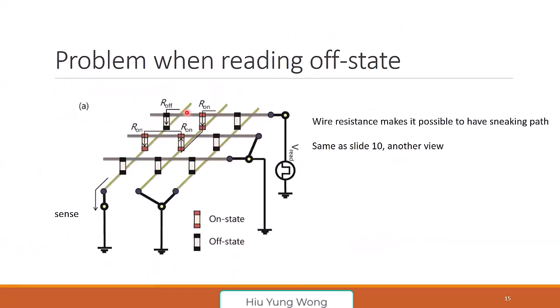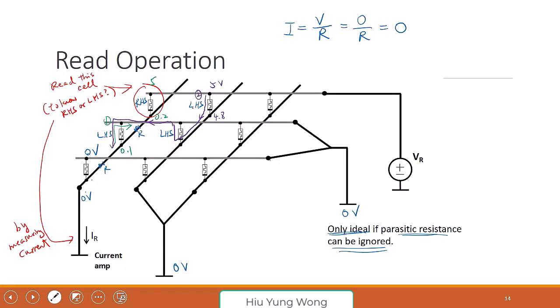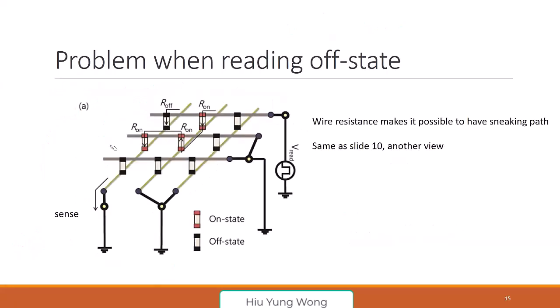Let me repeat what I just said — maybe I was a little too fast. Here I give you one case: let me erase the purple one. This is the second situation about the sneaking path when this is in the off state. This is situation two. So even with a very nice writing scheme we still have some problems. We also have a good reading scheme but still we have the sneaking path or sneak path.